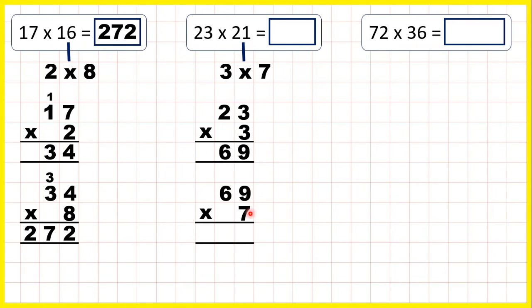9 times 7 is 63. So 6, 3. 6 times 7 is 42. Plus 6 is 48. So, 23 times 21 is 483.